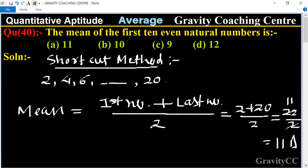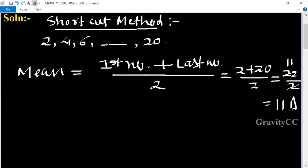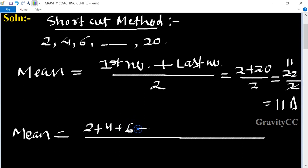And now we can find by long method. So mean equal to 2 plus 4 plus 6 plus 8 plus 10 plus 12 plus 14 plus 16 plus 18 plus 20.